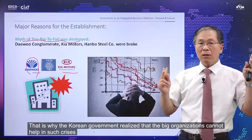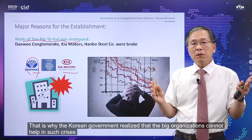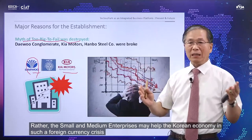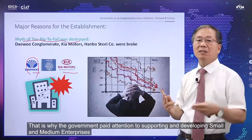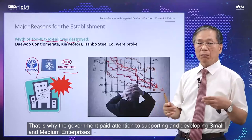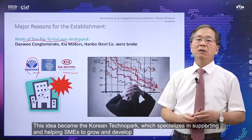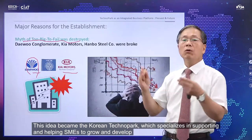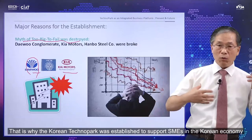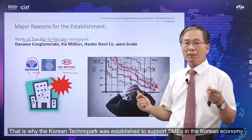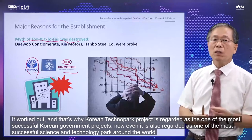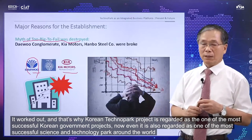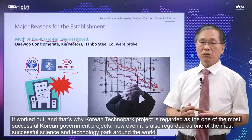That's why the Korean government realized that big organizations cannot help in this crisis. Rather, small and medium enterprises might help the Korean economy. That's why the Korean government paid attention to supporting and developing small and medium enterprises — via Korean Technoparks. Korean Technopark is specialized in supporting and helping small and medium enterprises to grow and develop. It worked out, and that's why Korean Technopark project is regarded as one of the most successful Korean government science and technology projects.